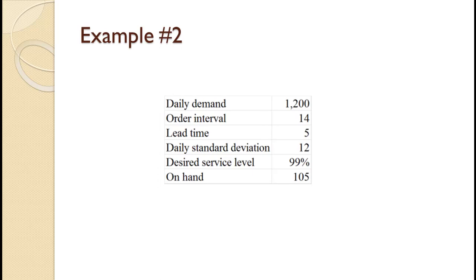Now here's an example for you to try. A company orders an item every two weeks. Once ordered, it takes five days to arrive. Average daily demand is 1,200 with a daily standard deviation of 12. They desire a 99% service level and currently have 105 on hand. What should the reorder quantity be? Since you've seen an example already, pause the video and try to work this problem on your own. Once you're done, you can use the video to check your work and spot any mistakes you might have made.